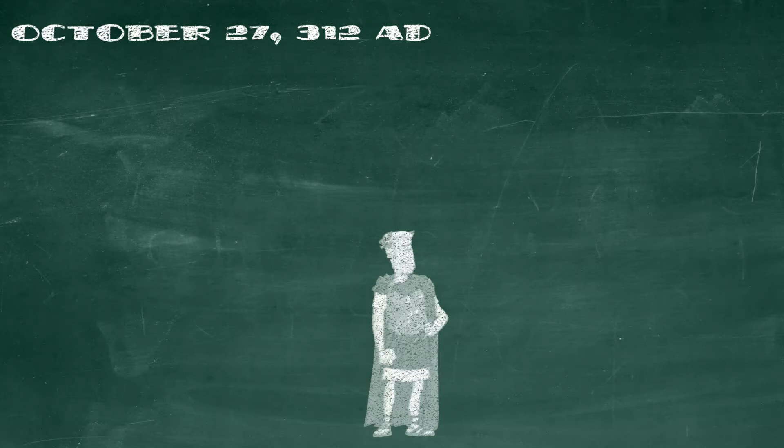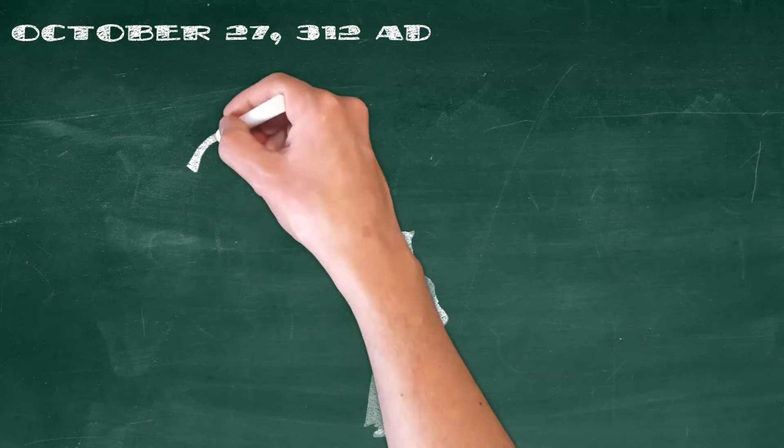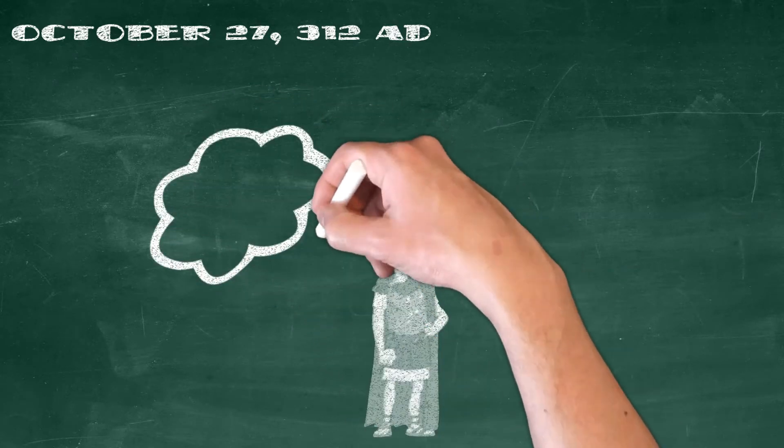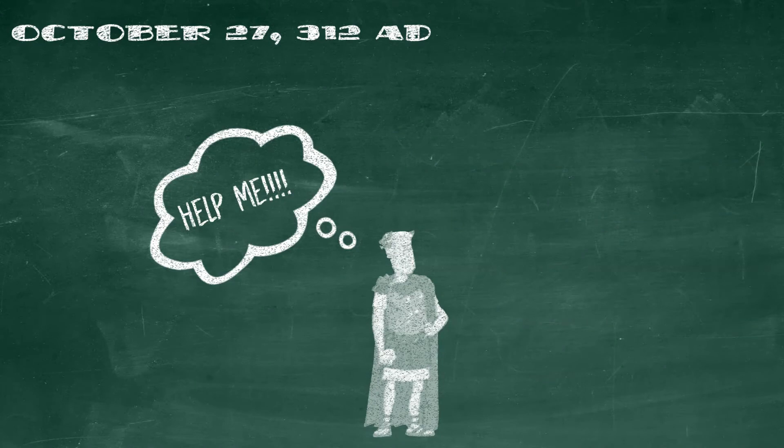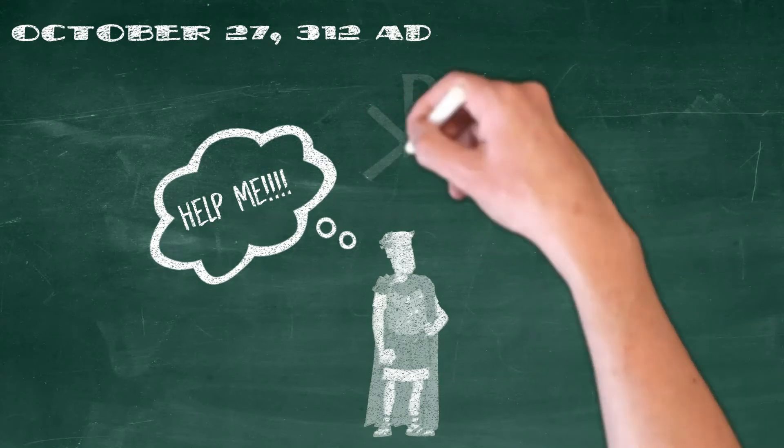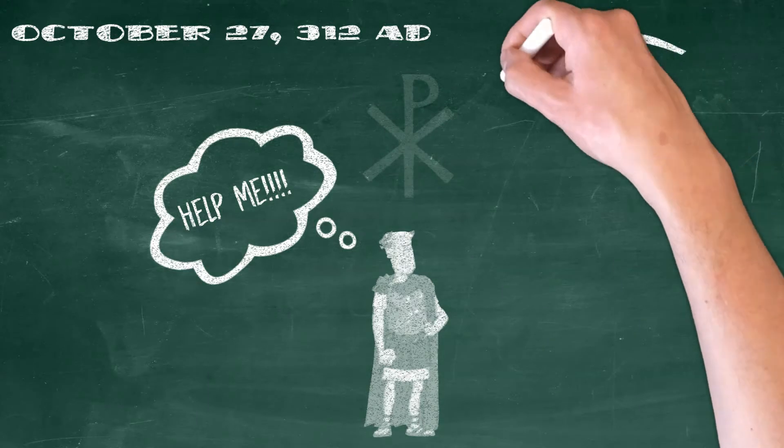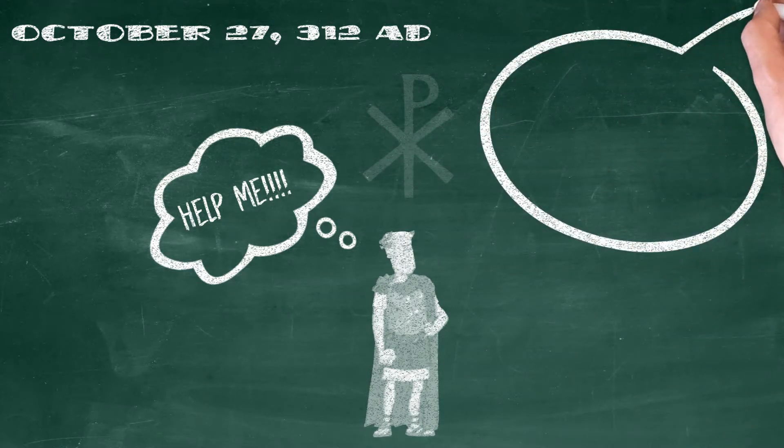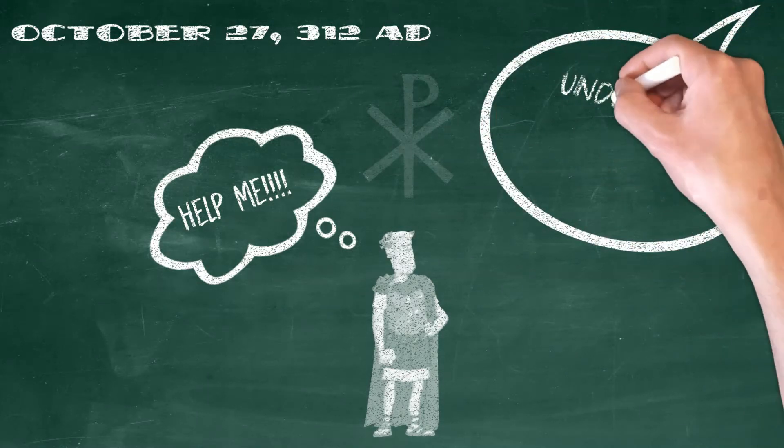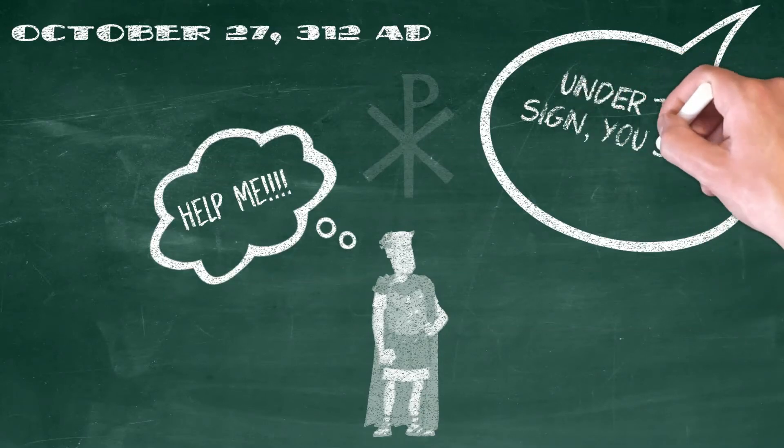Constantine and his army were gearing up to fight the much larger army of Maxentius the next day. And so the night before the battle, Constantine was praying to the Roman gods that they would help him win the battle. And instead, what he got was a vision appeared to him of the Chi Rho. And the Chi Rho is the traditional symbol of Jesus Christ. It's the first two letters in Greek of the word Christ. And as he saw this vision, he heard a voice from the heavens say to him in Greek, under this sign, you shall conquer.